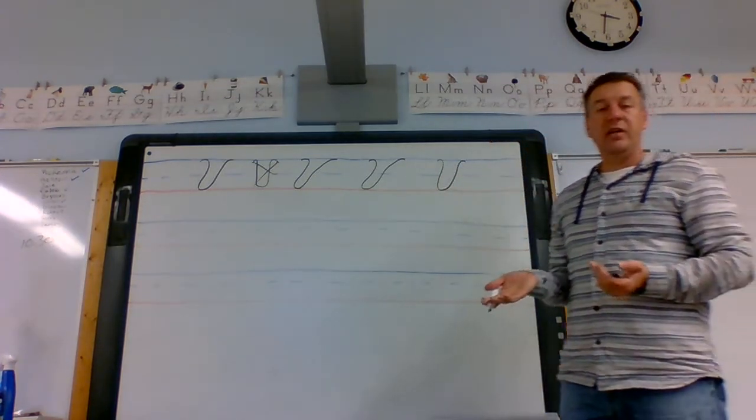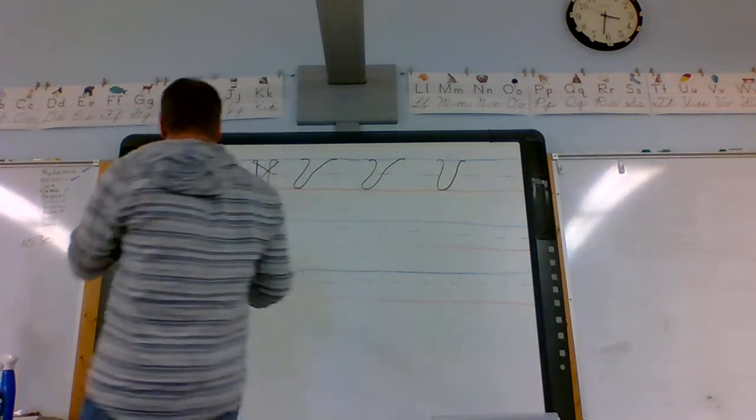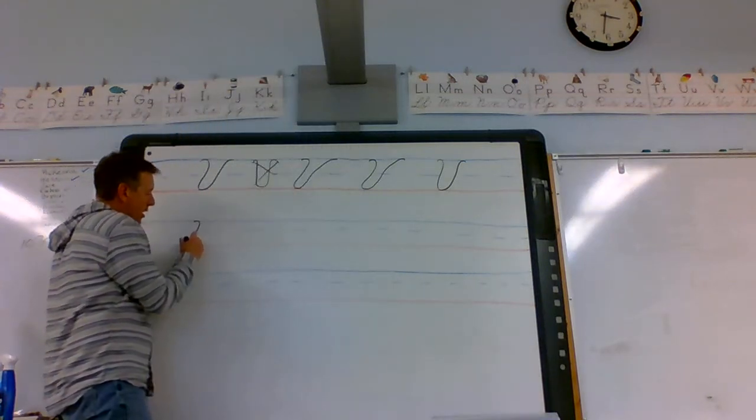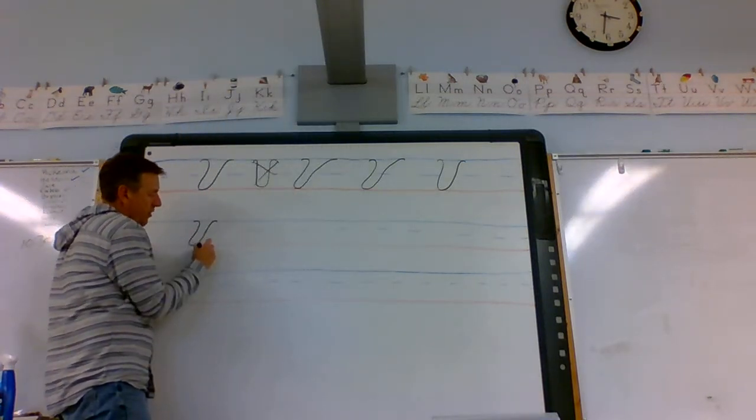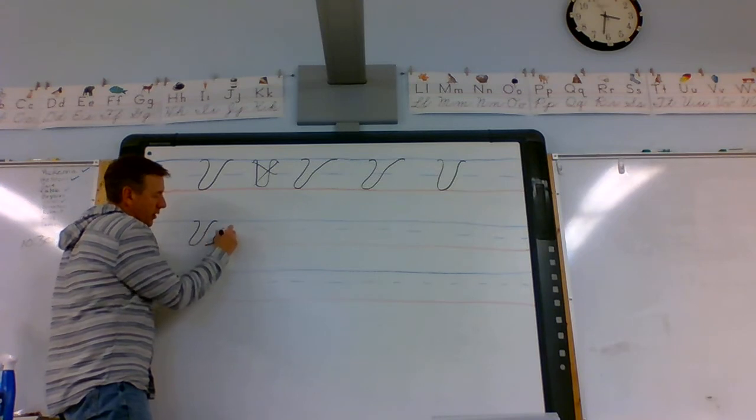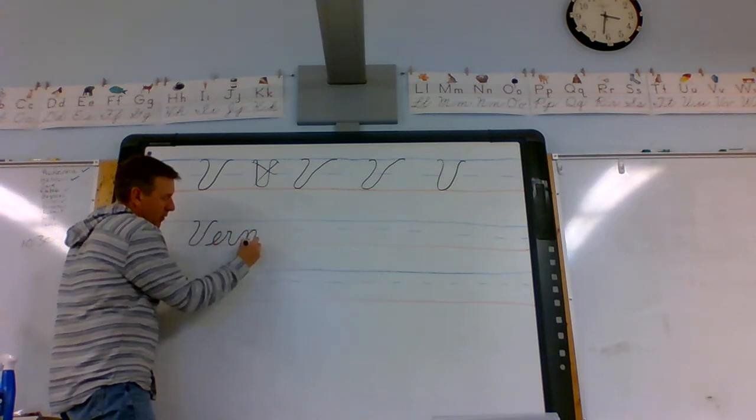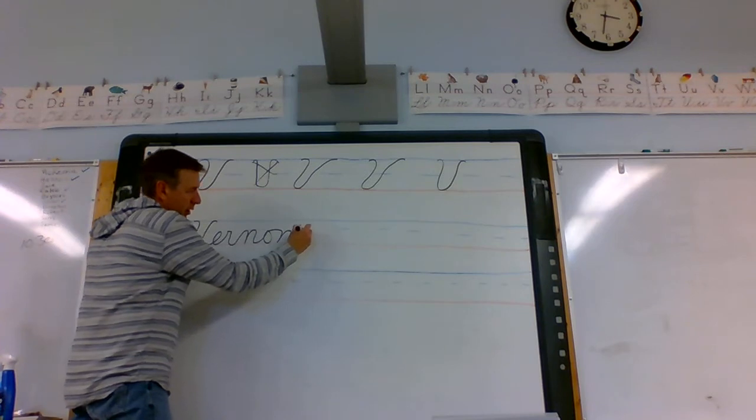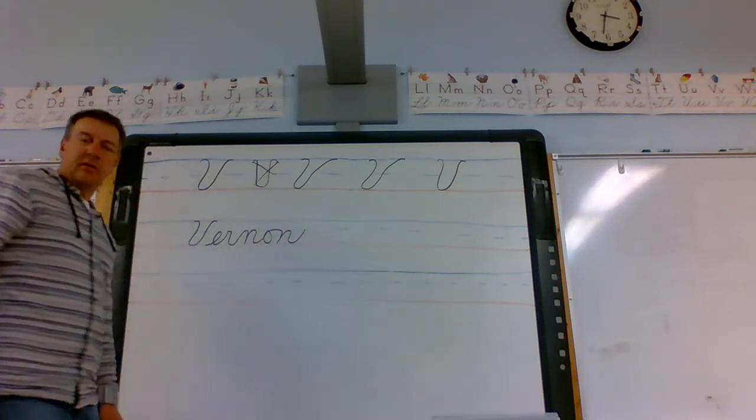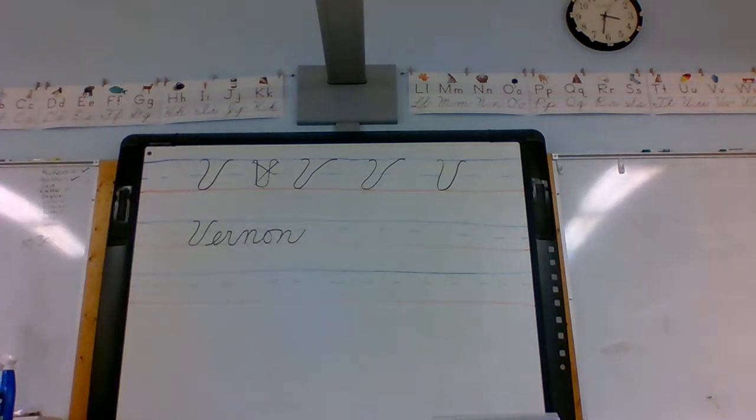V - now V does not connect into other letters. That's why when we write Vernon, we start fresh with a new E. E has a check stroke and N ends at the middle of the line. See how I did that? Venezuela. You're gonna have to write underneath there: V-E-N-E-Z-U-E-L-A, Venezuela.